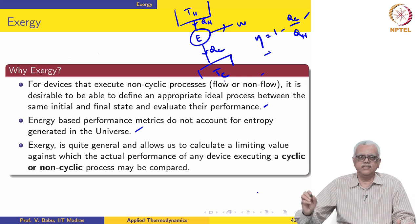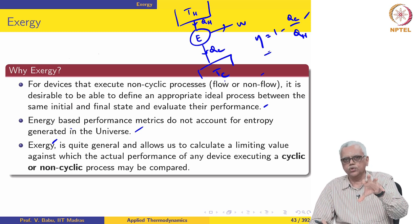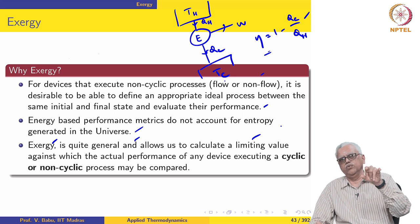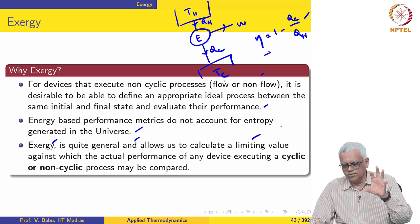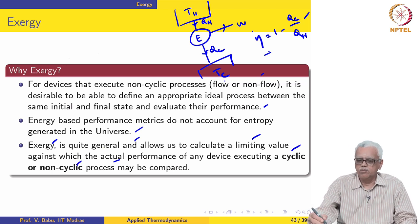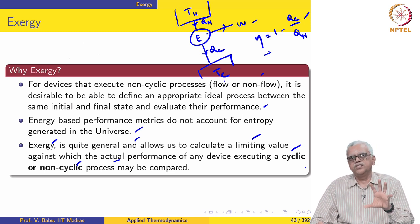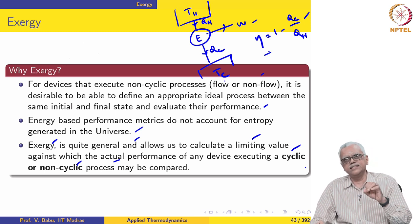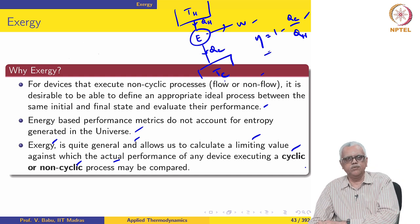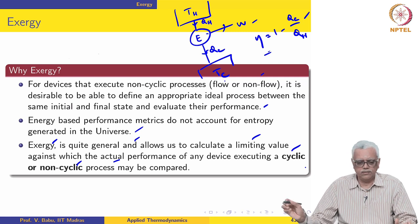Energy-based performance metrics do not necessarily account for entropy generated in the universe. The expression for exergy that we are going to develop meets these requirements. It is quite general and allows us to calculate a limiting value — meaning the maximum work possible for any process. It allows us to calculate a limiting value against which the actual performance of any device, executing a cyclic or non-cyclic process, may be compared. Exergy is very general: it can be applied to any process and allows us to calculate the maximum work between two given end states, whether cyclic or non-cyclic.